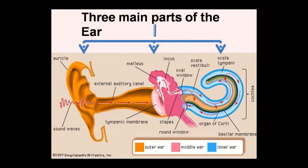The inner ear is filled with fluid. Along with the fluid, there are receptors in the inner ear. As I mentioned in the general introduction, sound receptors are also located in the inner ear. When a sound comes, the fluid in the inner ear begins to move.